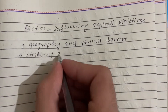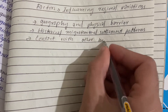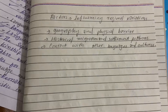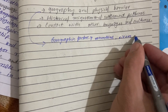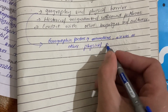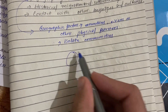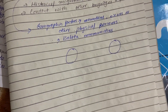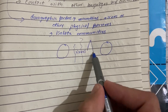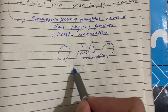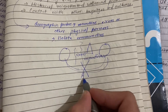Geographic factors such as mountains, rivers, or other physical barriers can isolate communities from one another, which leads to linguistic differences over time. For example, if two communities share the same language or dialect but are separated by mountains or rivers, their lack of contact with each other can lead to linguistic differences over time, which can be called regional variation.